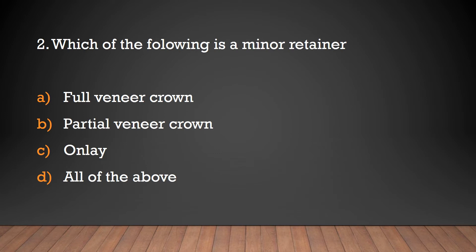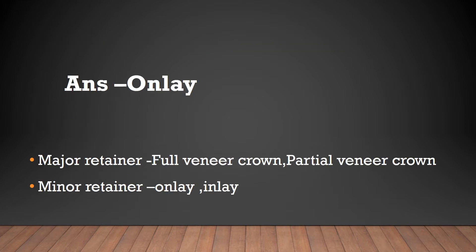Which of the following is a minor retainer? Full veneer crown, partial veneer crown, onlay, or all of the above? The answer is onlay only. Major retainers are full veneer crown and partial veneer crown; minor retainers are onlay and inlay.